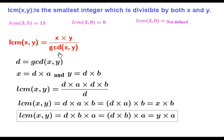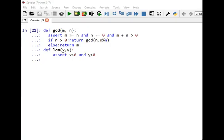Now we only need to show this common multiple is the least. In the equation, the only variable is GCD. To decrease the value of LCM we would need to increase GCD, but that is impossible since d is already the greatest common divisor. So we cannot decrease this common multiple, and therefore the value we obtain is indeed the least common multiple.